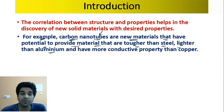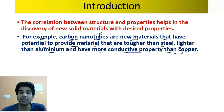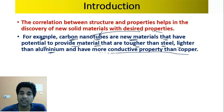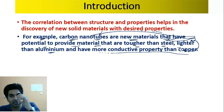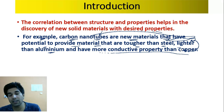Carbon nanotubes are lighter than aluminum and have electrical conductivity comparable to copper. So a single material — carbon nanotubes — can be tougher than steel, lighter than aluminum, and as conductive as copper, making it an extraordinary new material.